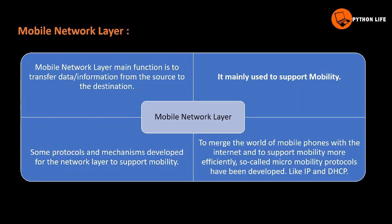First, we will learn how to use a mobile network layer. The main function of the network layer is to use the source to destination. What is the mobile network layer? This is the same as data transformation. The main thing is to use mobility. Some protocols and mechanisms are developed for the network layer to support mobility.